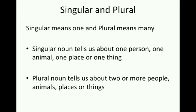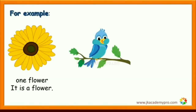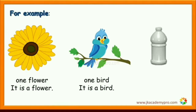Now let's learn with examples. One flower — it is a flower. One bird — it is a bird. One bottle — it is a bottle.